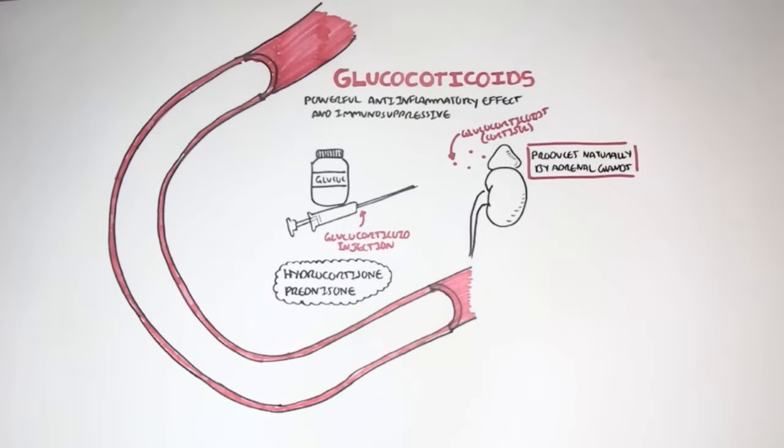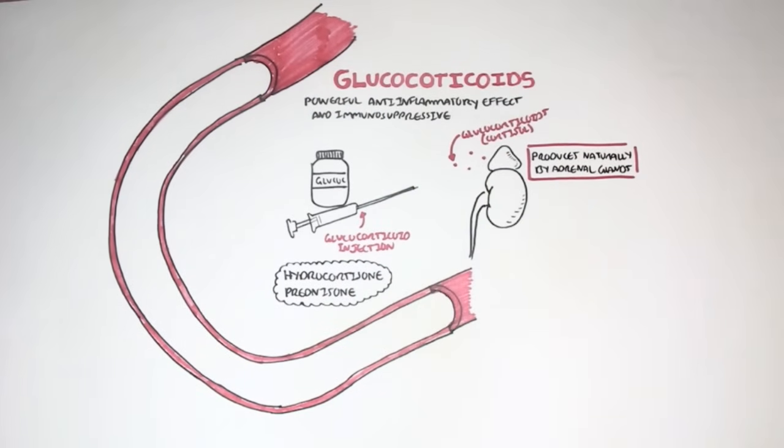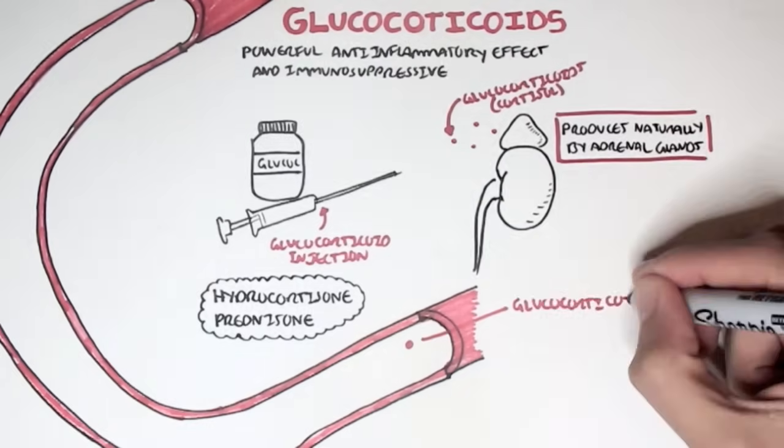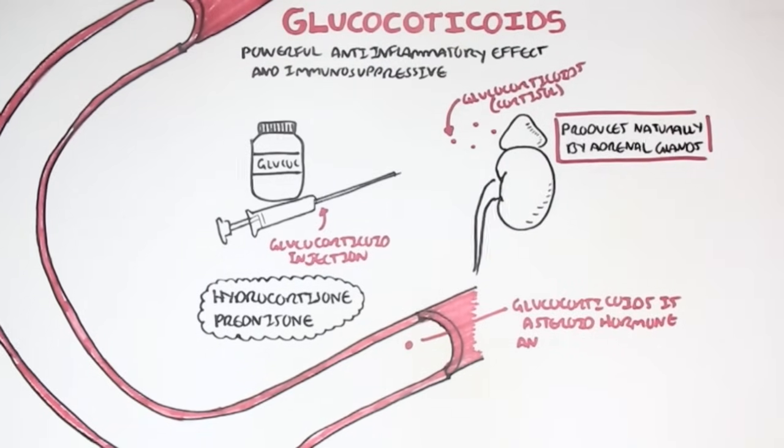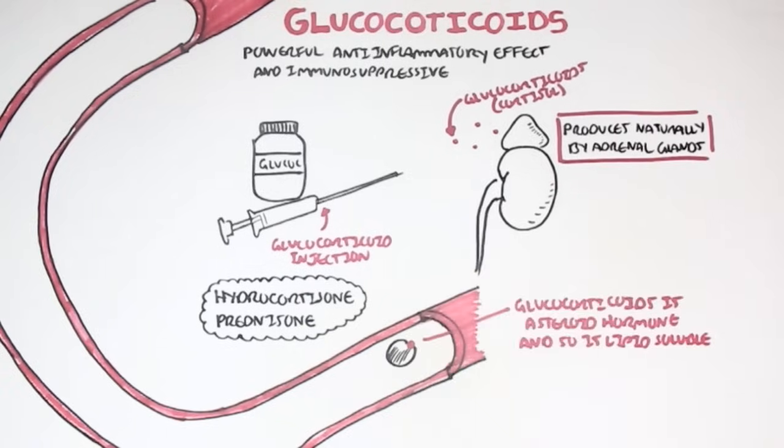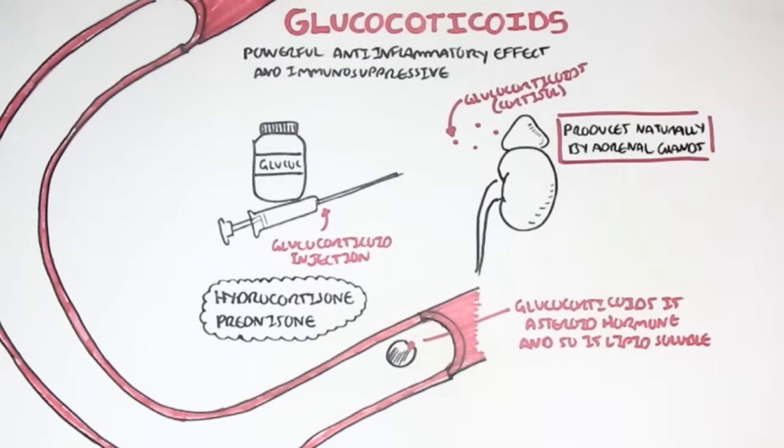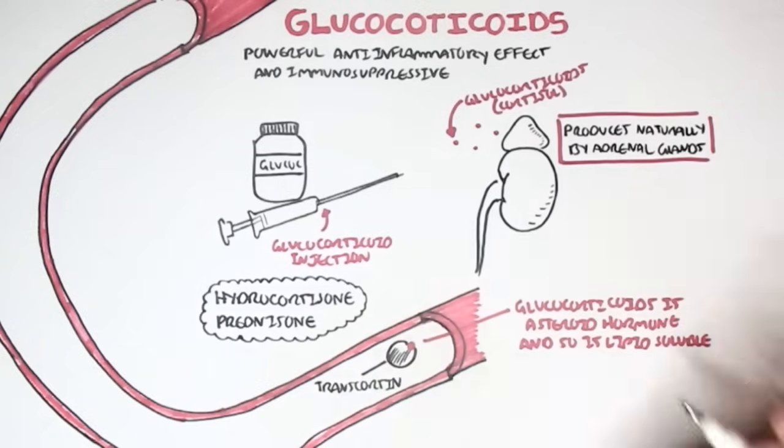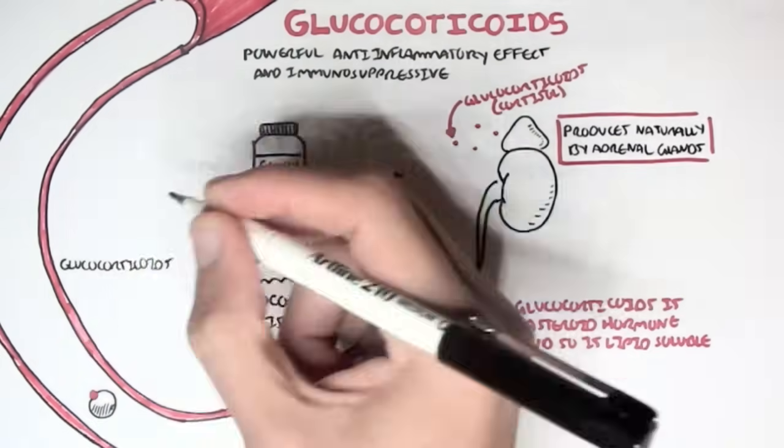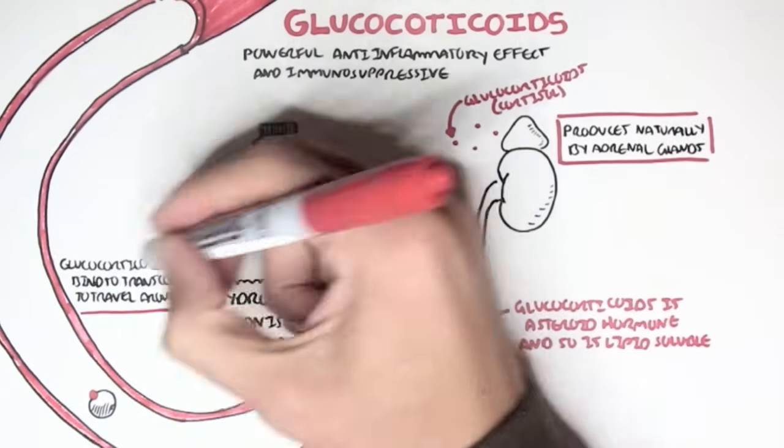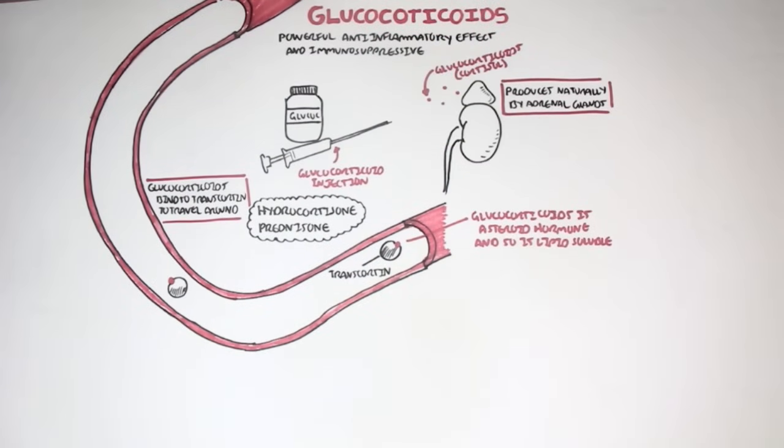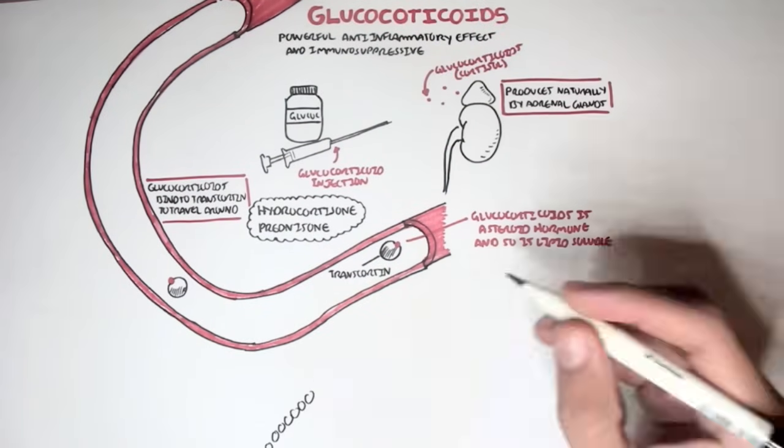Now, because glucocorticoids are a steroid hormone and so is lipid soluble, they have to transport around the blood bounded by a protein. This protein is a carrier protein for glucocorticoids known as transcortin. So transcortin essentially binds and transports glucocorticoids around our body to specific locations.